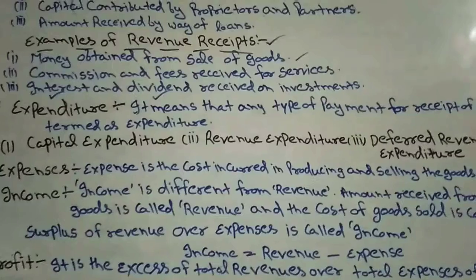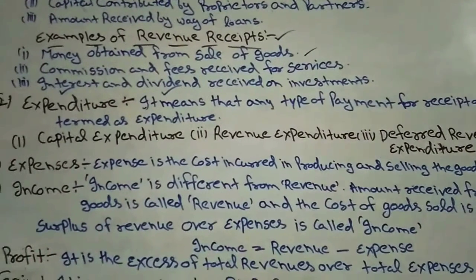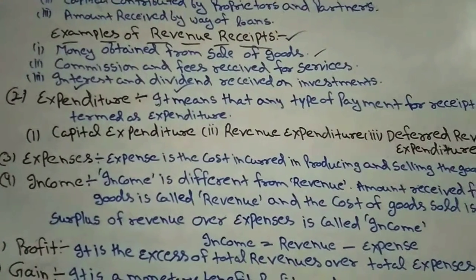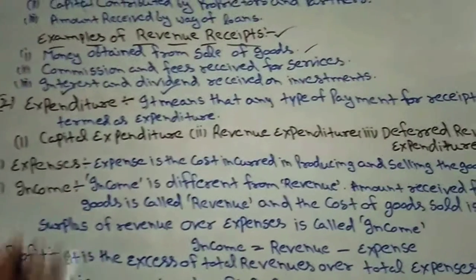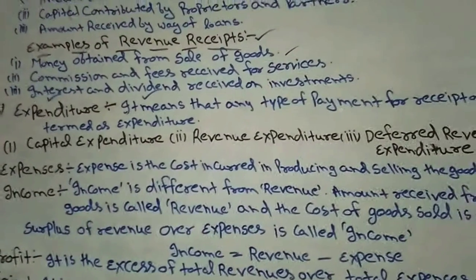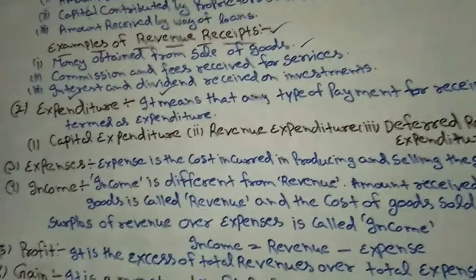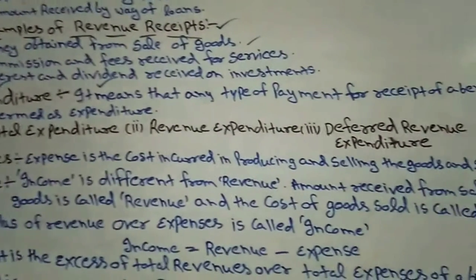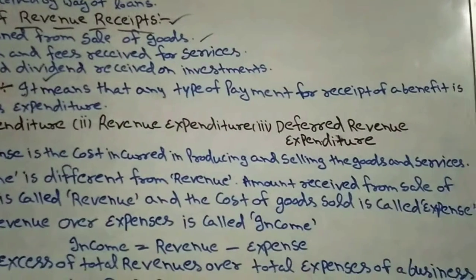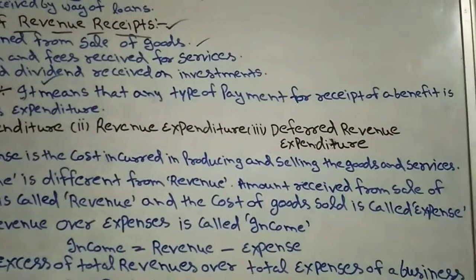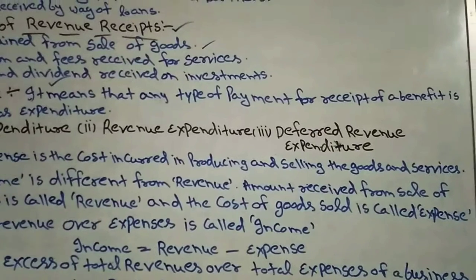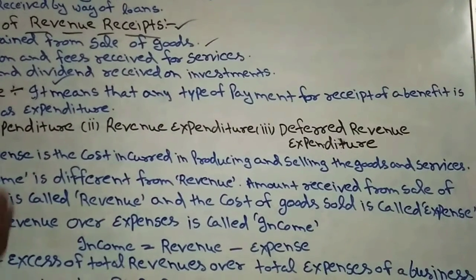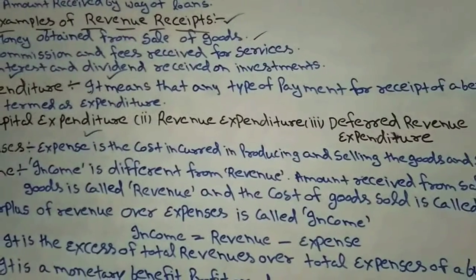The expenses that we have to incur in order to run the business — for example, if we bought a machine — such expenses are called capital expenditures. Any expenses incurred to run the business smoothly and properly are called capital expenditures.